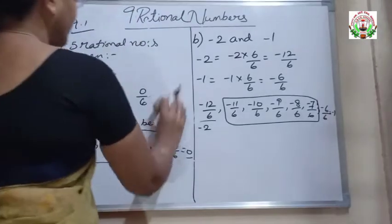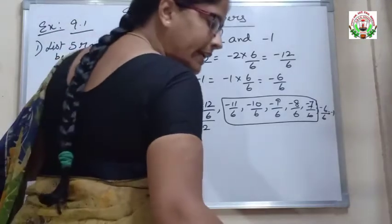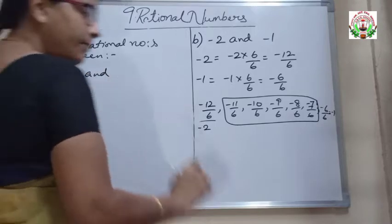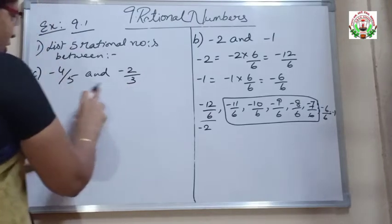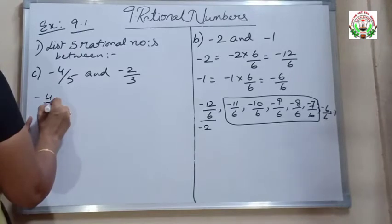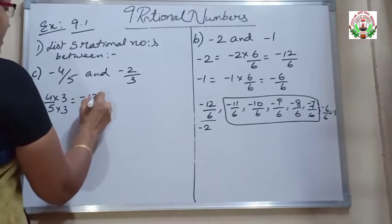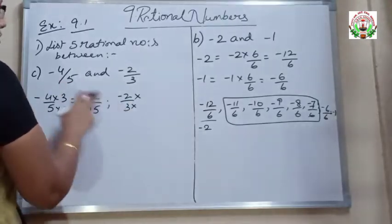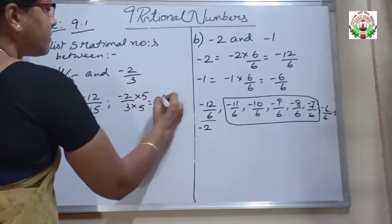Part C: finding 5 Rational Numbers between minus 4 by 5 and minus 2 by 3. The denominators are different, so first we make them the same. I multiply the first Rational Number by the second's denominator, 3, giving minus 12 by 15. And I multiply minus 2 by 3 by the first's denominator, 5, giving minus 10 by 15. Now the denominators are the same.